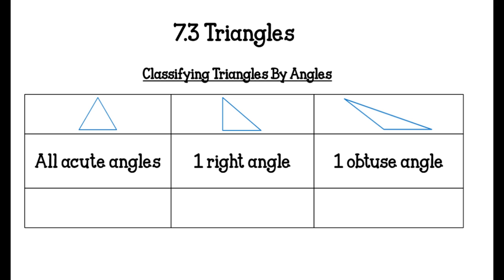This first triangle we have here has all acute angles, which means that it is an acute triangle. So all the angles are acute, so we label it as an acute triangle. If we have a triangle that has one right angle, it is a right triangle.